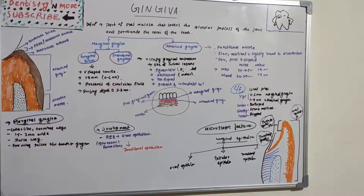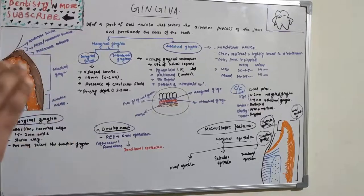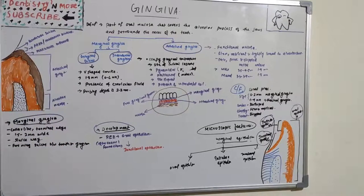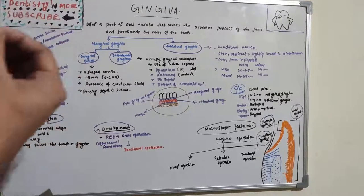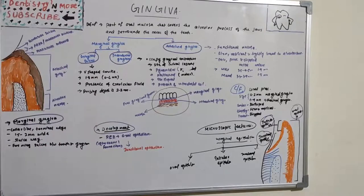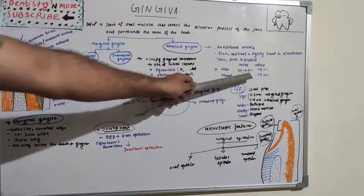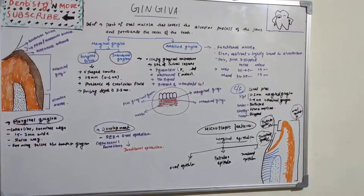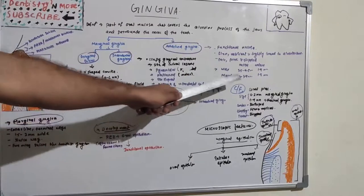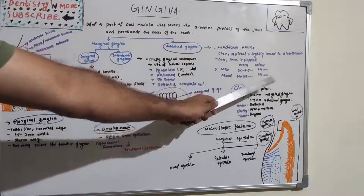Attached Gingiva is a functional mucosa — very firm, resilient, and tightly bound to alveolar mucosa. It is pale pink and stippled. Stippling is the alternate protuberances seen on the gingival surface giving it an orange-peel appearance. The epithelium and connective tissue interdigitation gives that stippled appearance. Stippling is a good sign; if stippling is absent, some pathology is involved. In the maxillary incisal region, attached Gingiva ranges from 3.5 to 4.5 mm; in the molar it is 1.9 mm; in the mandibular region it is 3.3 to 3.9 mm and in the mandibular molar 1.8 mm.